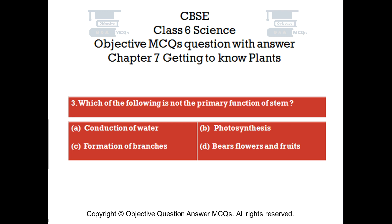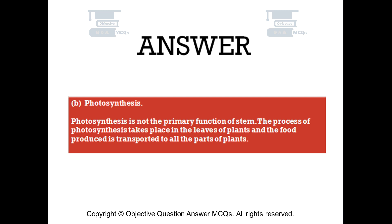The right answer is Option B: Photosynthesis. Photosynthesis is not the primary function of the stem. The process of photosynthesis takes place in the leaves of plants, and the food produced is transported to all parts of the plant.